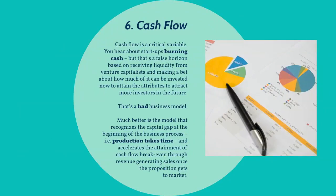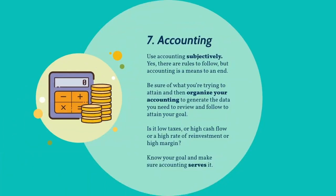Six: cash flow is a critical variable. You hear about startups burning cash, but that's a false horizon based on receiving liquidity from venture capitalists and making a bet about how much of it can be invested now to attract more investors in the future. That's a bad business model. Much better is the model that recognizes the capital gap at the beginning of the business process — i.e., production takes time — and accelerates the attainment of cash flow break-even through revenue-generating sales once the proposition gets to market. Seven: use accounting subjectively. Yes, there are rules to follow, but accounting is a means to an end. Be sure of what you're trying to attain, and then organize your accounting to generate the data you need. Is it low taxes or high cash flows or a high rate of reinvestment or high margin? Know your goal and make sure accounting serves it.